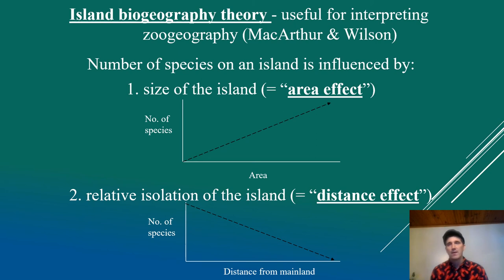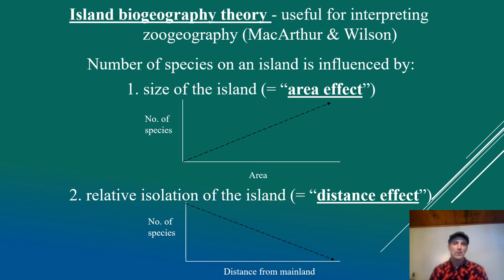The more isolated an island is, the fewer species it has. A little island out in the middle of nowhere like Fiji doesn't have a lot of species diversity because it's harder for animals to get there — fewer land bridges, fewer sweepstake events where animals could have made it. It's important to think of island biogeography beyond just actual islands. An island can be a pocket of habitat — an area of deciduous woods surrounded by prairies, or alpine habitat on mountaintops isolated from each other. Island biogeography relates to islands of habitat as well.